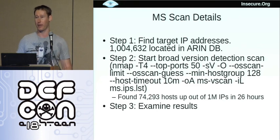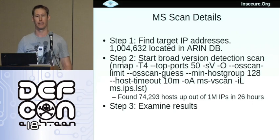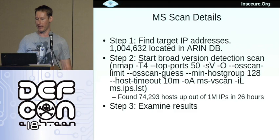Set a host timeout of ten minutes so that we don't waste too much time on any single host. Send the output to files, and I give it the list of IP addresses. This sort of scan, not many years ago, could have taken a month to complete. Fortunately, Nmap's gotten a lot smarter in the last few years and developed more clever algorithms. In this case, we were able to scan the million IP addresses in about one day - 26 hours - and we have 74,293 hosts up.